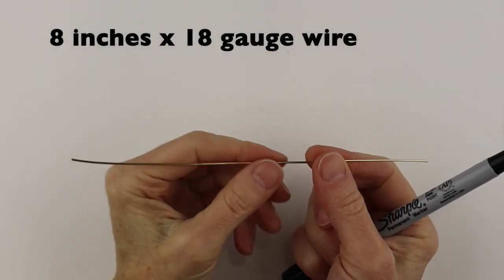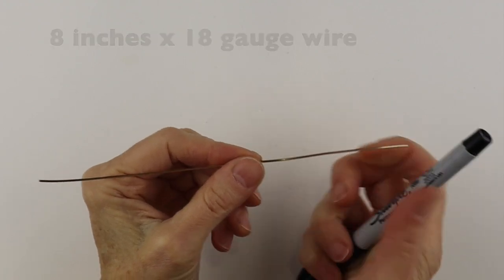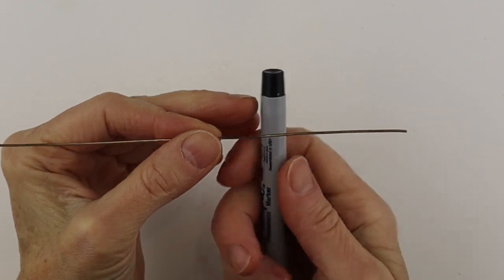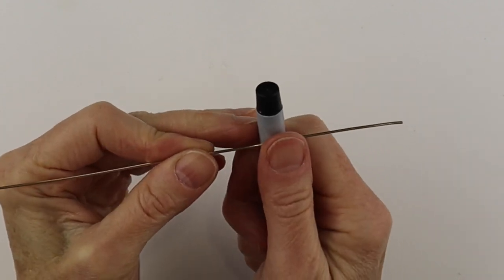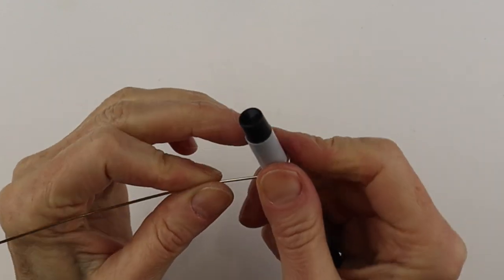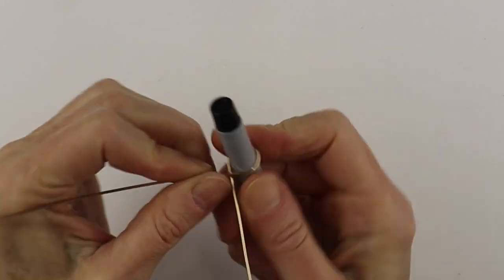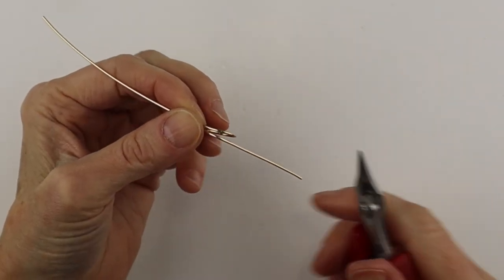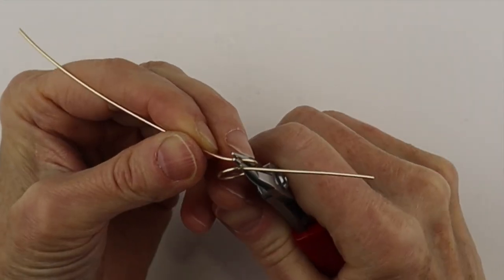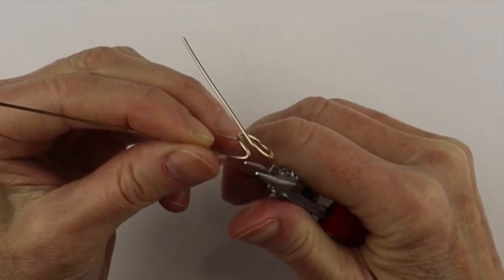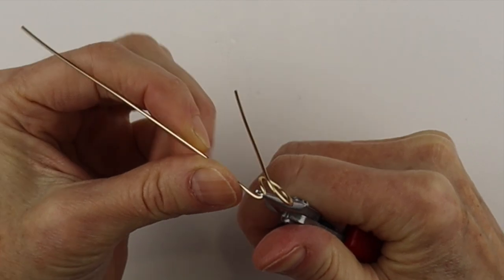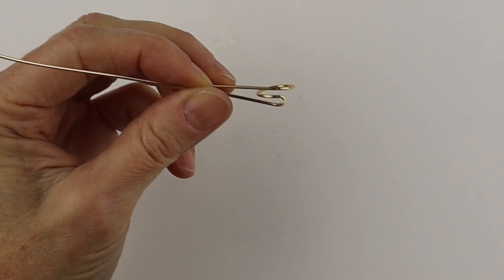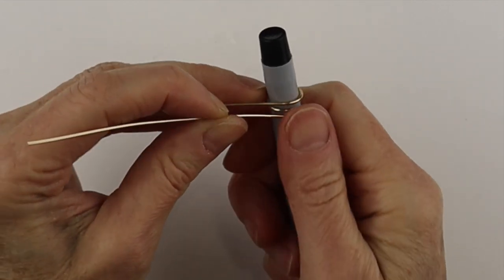If you're using thicker wire, this is 18 gauge wire, you might want to form the curve first. So get a pen or a Sharpie and just bring it around a full curve. Get your round pliers, hold the end and then bring it around.